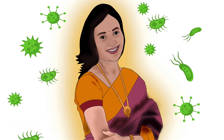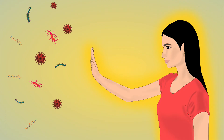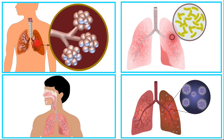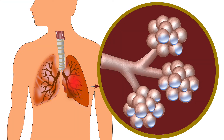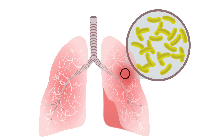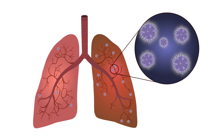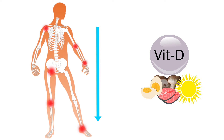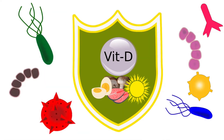Vitamin D is an immunomodulator. This means that it helps in controlling and supporting the immune system. It helps to activate the body's natural response to fight diseases. Vitamin D protects the body against several respiratory infections, for example, pneumonia, influenza, tuberculosis, and COVID-19. Reduction in inflammation in the body is also aided by vitamin D. Its other properties are to protect the body from viruses, bacteria, and fungi.